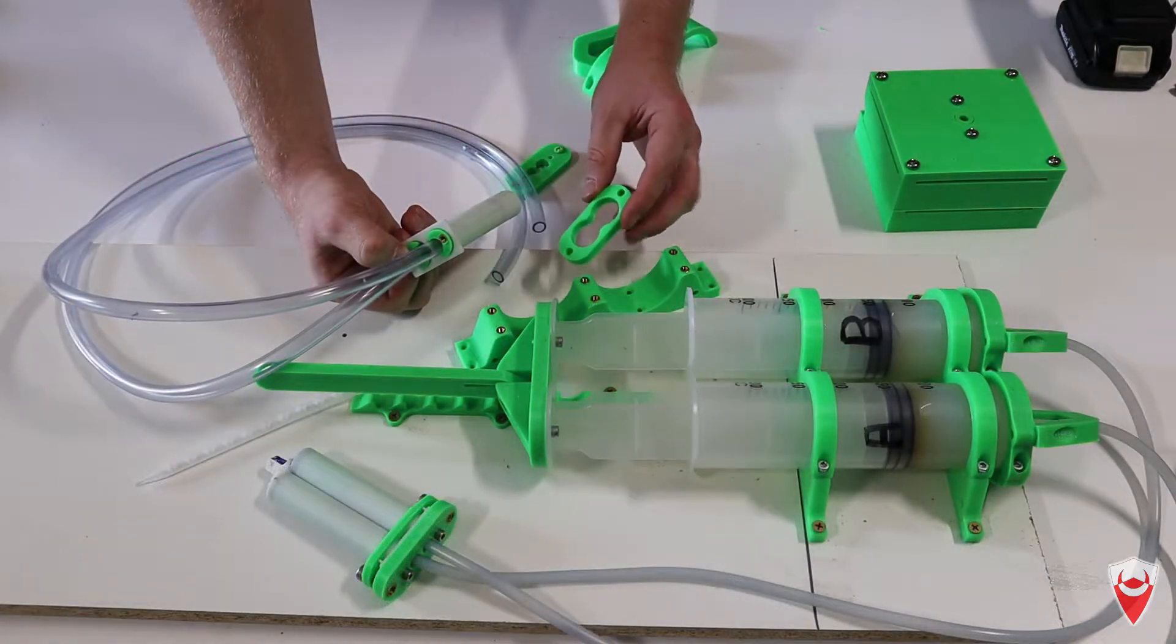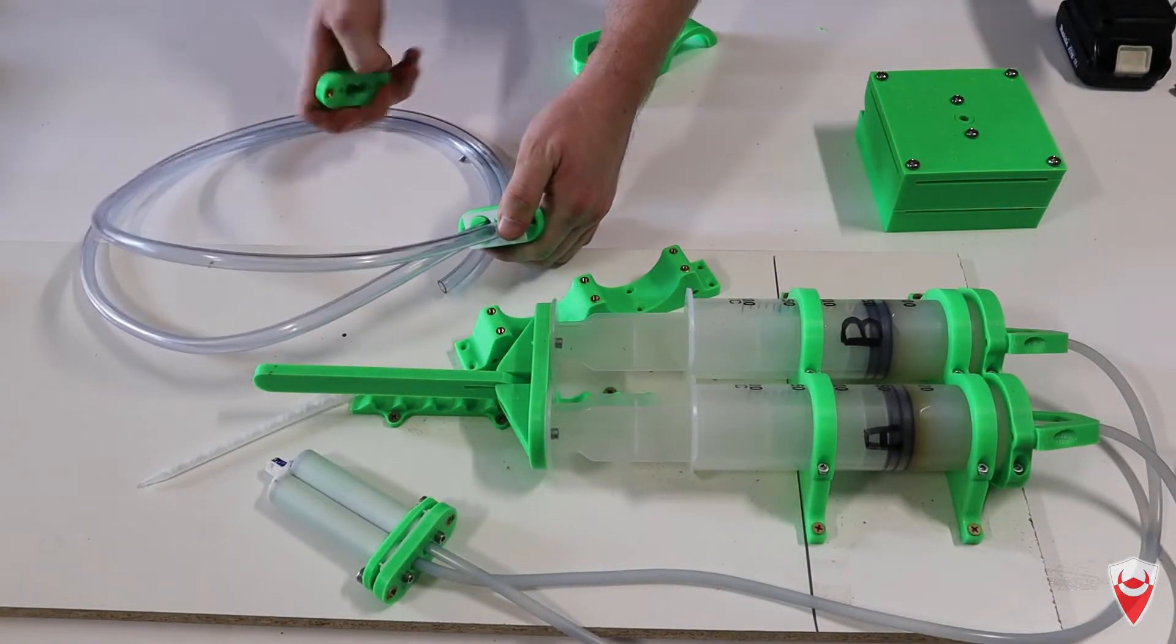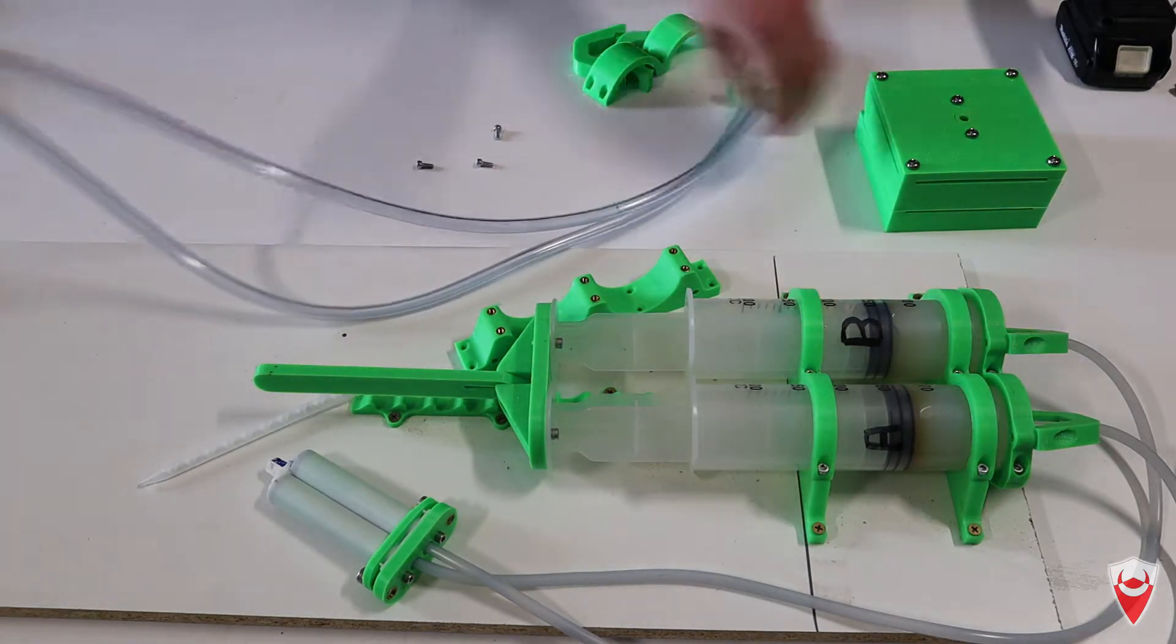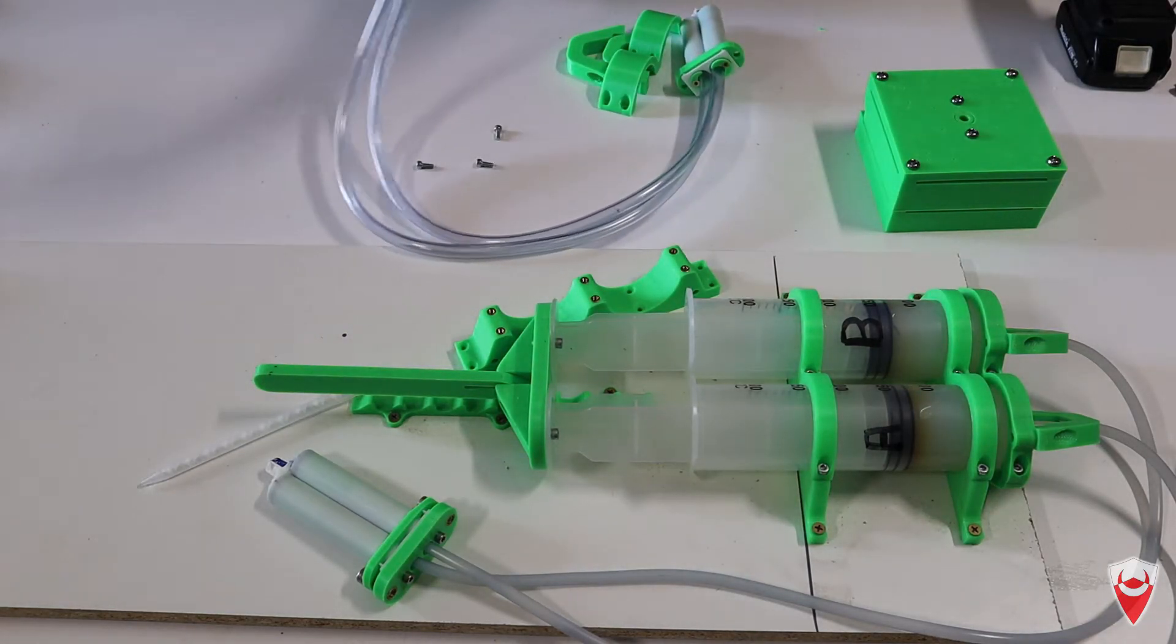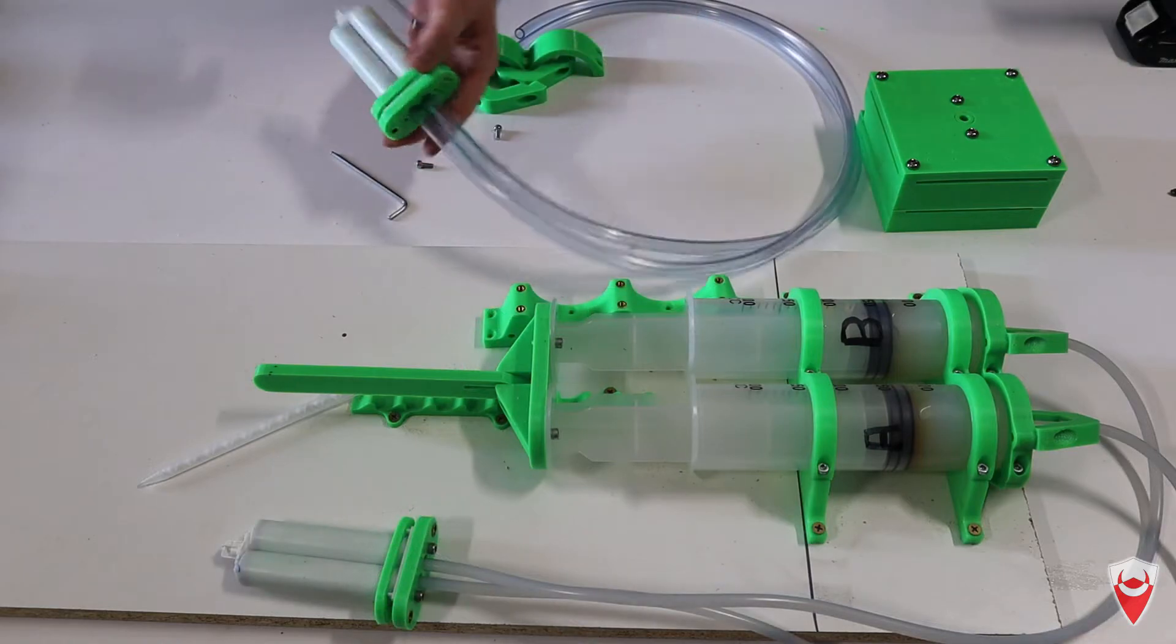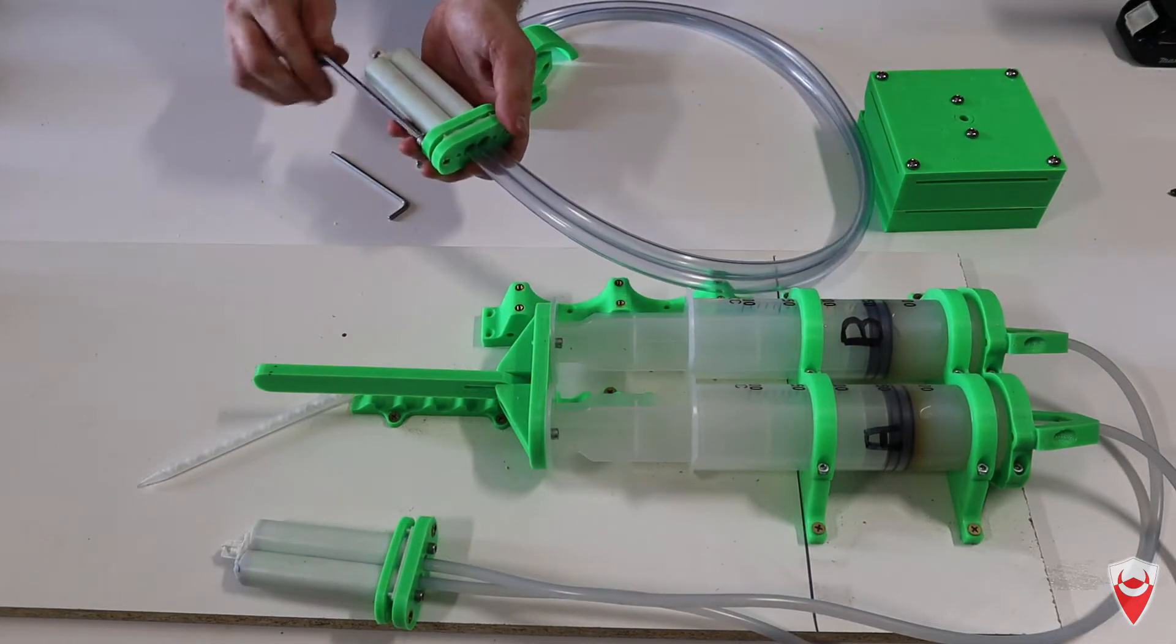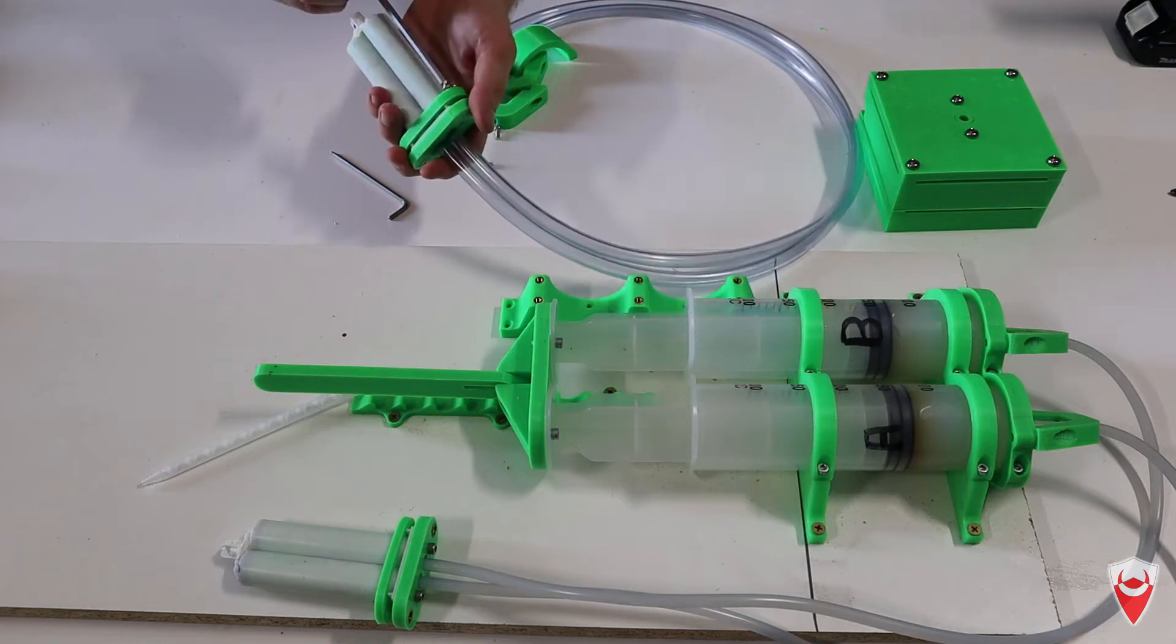The next part is this retention bracket here. It just slides over the front of the tubes like that. And then the back of the tubes. We take this and put this bracket over. They don't have to be done up incredibly tight. Just enough to snug everything down and keep everything firmly attached.